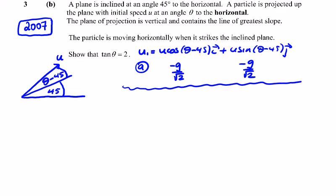We're told the particle is moving horizontally when it strikes the plane, so it's coming in like this. The tan of the angle of landing will be alternate to this 45 down here. You can see this angle — it strikes the plane horizontally — and the angles are the same. So we can say tan(b), or whatever we call it, is equal to 45. That will come in handy at the end.